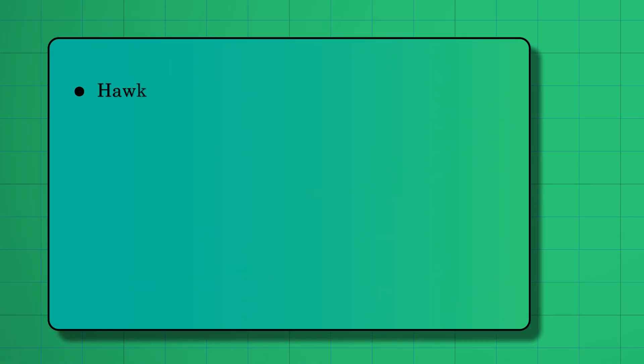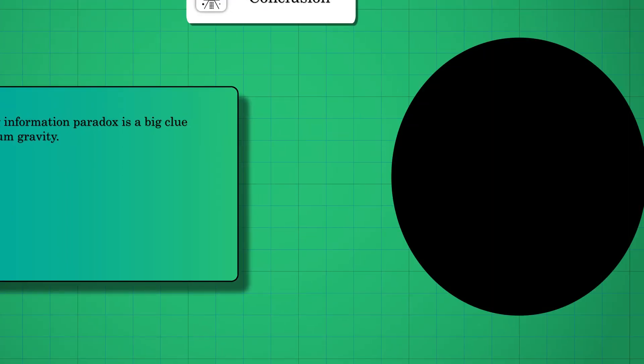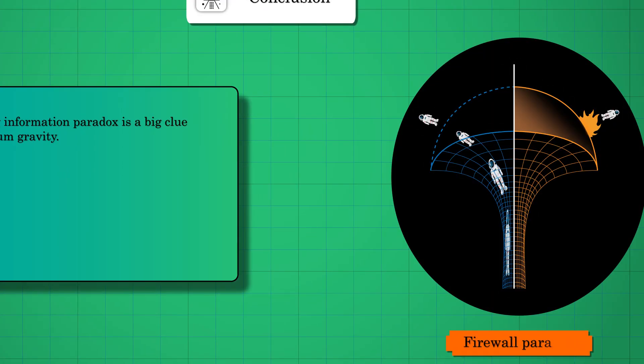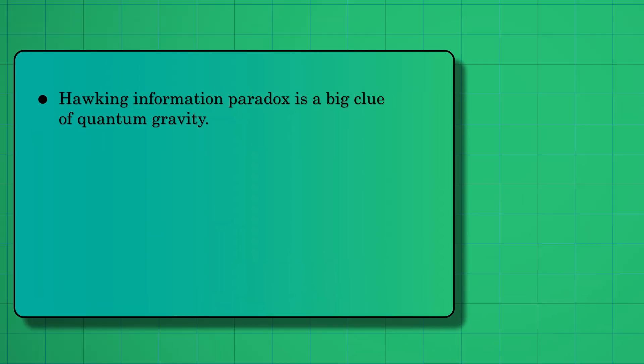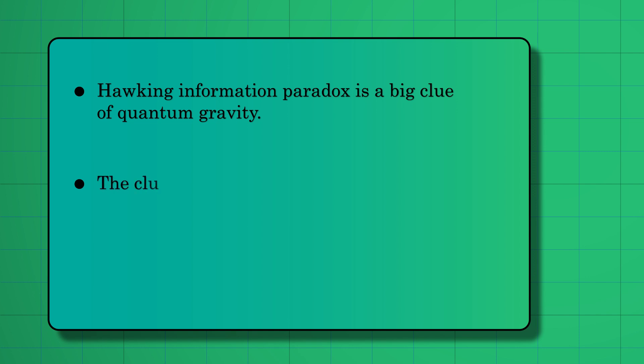Because Hawking's information paradox predicts the breakdown of either quantum mechanics or general relativity, and physics thrives in such paradoxes, Hawking's paradox could be the biggest clue for discovering new physics—most importantly, quantum gravity.